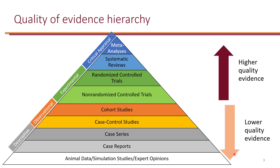When looking at the quality of evidence hierarchy, note that cohort studies and case control studies are lower quality compared to non-randomized control trials and randomized control trials. Observational studies in general have lower quality of evidence than experimental studies, which have lower than critically appraised studies such as meta-analysis and systematic reviews.